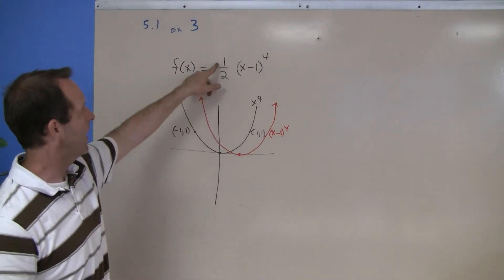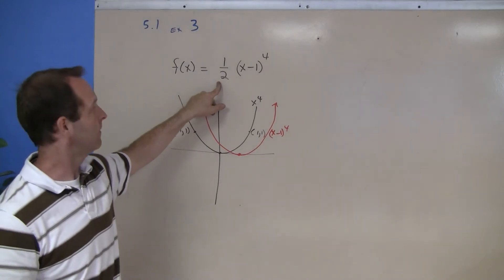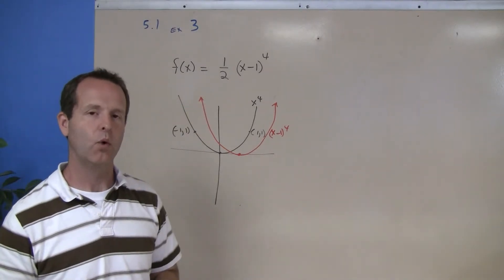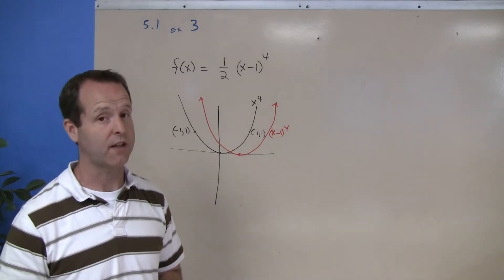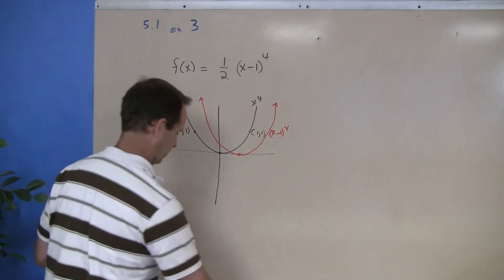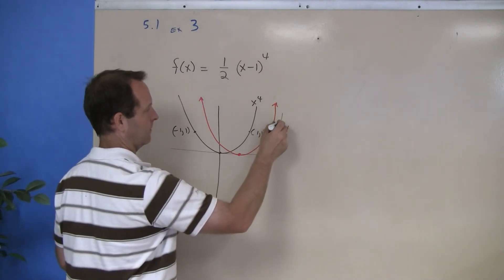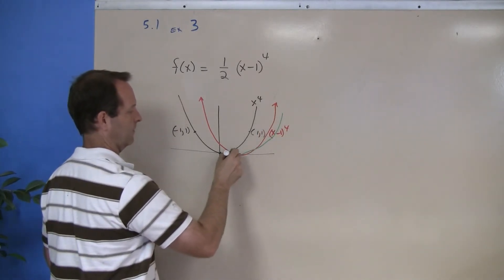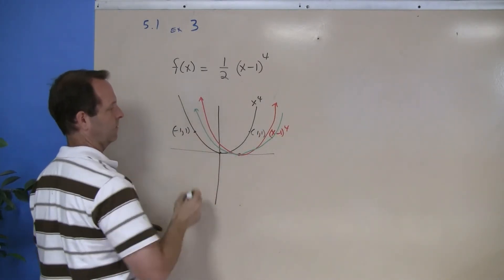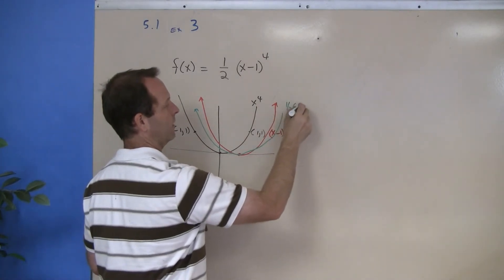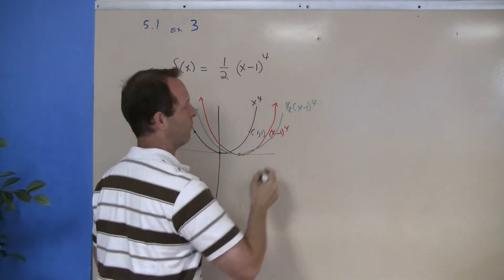And then lastly, I have this 1/2. It's happening outside—it's kind of this amplitude. So 1/2 is squishing the graph. So that this is 1/2(x - 1) to the fourth.